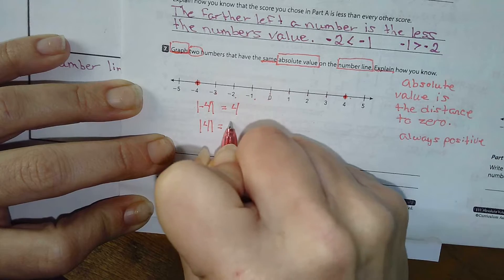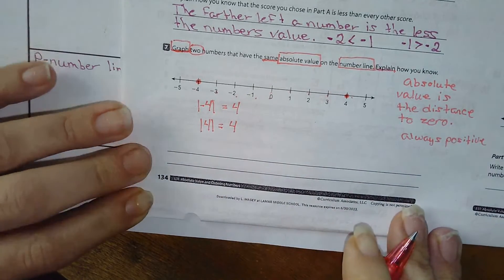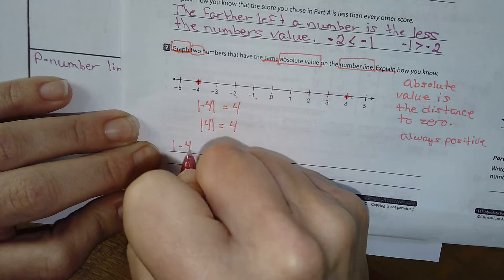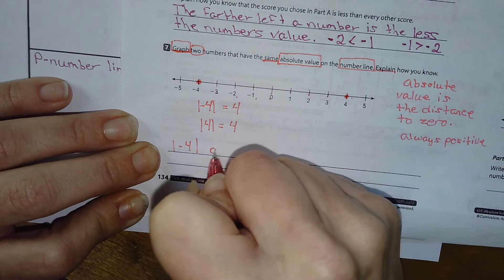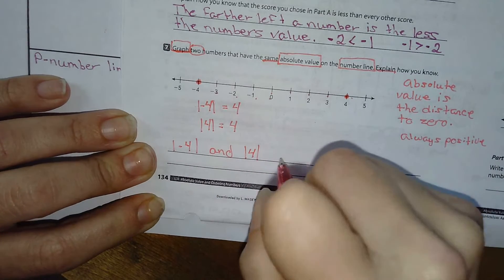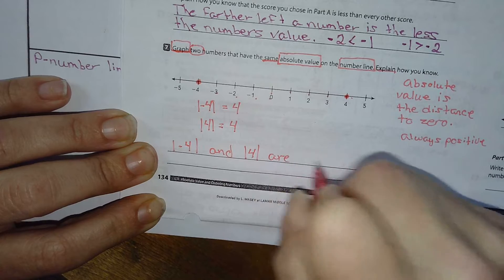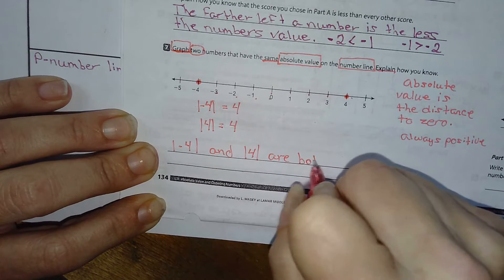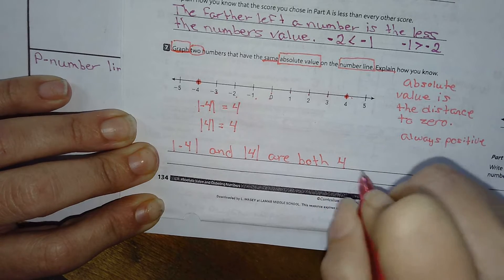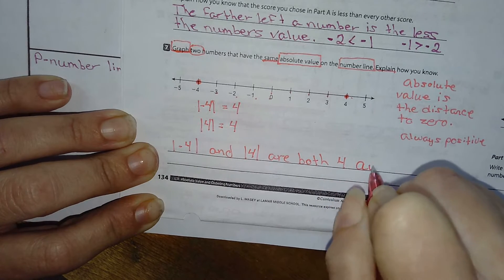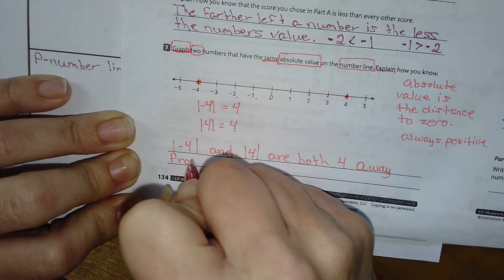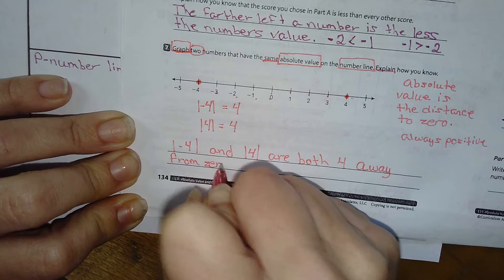So I'm going to do the absolute value of negative 4 and the absolute value of 4. They are both 4 away from 0, okay?